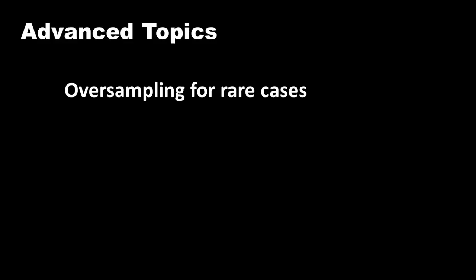That gives your model very little opportunity to learn about the characteristics of these success cases. Therefore, what we tend to do when you've got rare cases is create our dataset not with totally random sampling. So even though there are only 1,000 success cases in the 100,000, we want our dataset to disproportionately reflect the success cases.